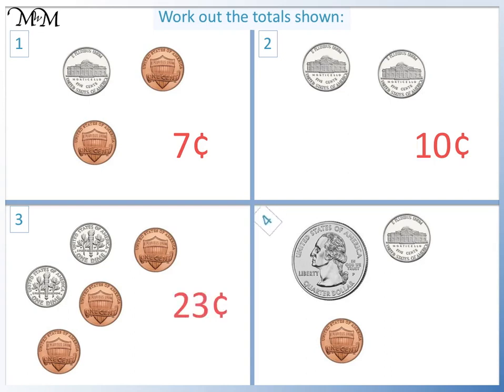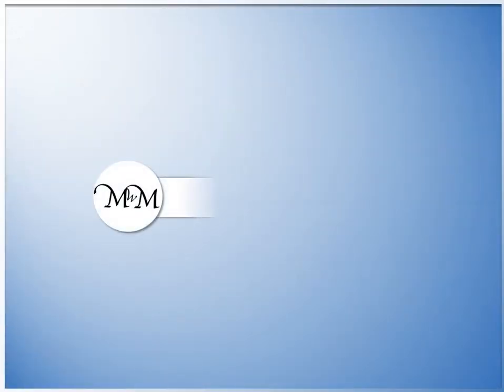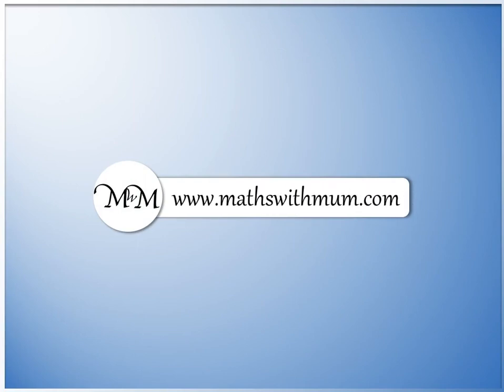Question four: we have a quarter, which is twenty-five cents, plus five cents equals thirty, plus one cent equals thirty-one cents. Thank you for watching. If you would like further practice, more questions are available on our website.